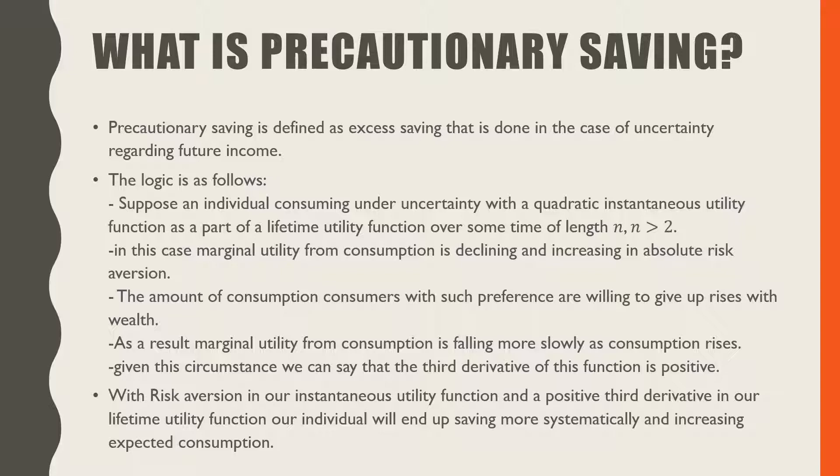Suppose an individual is consuming under uncertainty with a quadratic instantaneous utility function as part of a lifetime utility function over some time of length n, such that n is greater than 2. In this case, marginal utility from consumption is declining and increasing in absolute risk aversion.